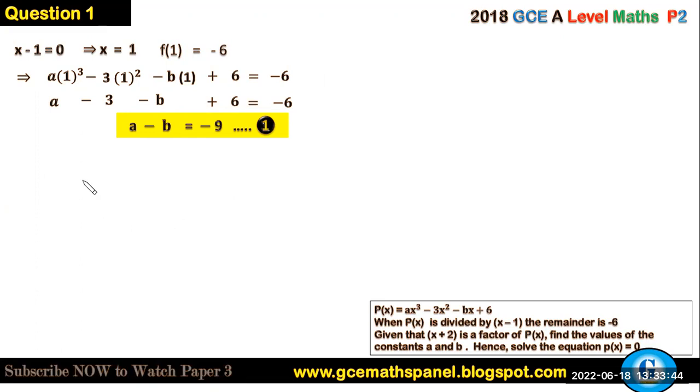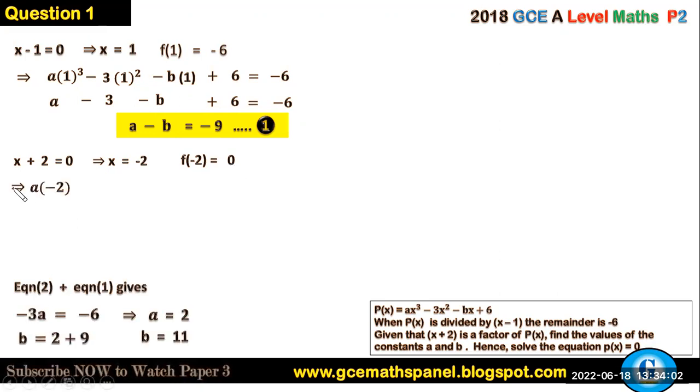Secondly, since (x + 2) is a factor, what does this imply? x + 2 = 0 gives us x equals negative 2, and f(-2) should give us 0. So f(-2) = 0 implies a(-2)³ - 3(-2)² - b(-2) + 6 = 0. This gives us -8a - 12 + 2b + 6 = 0, and you can form a second equation: -4a + b = 3. Call this now equation 2.